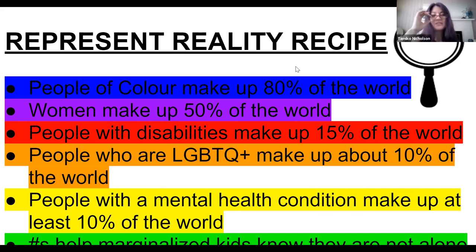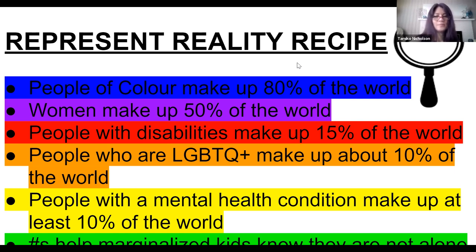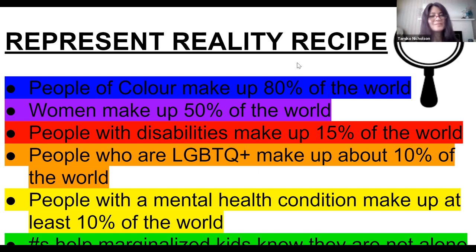Some are saying they would expect mental health stats to be higher — I would expect it to be higher too, especially now. These are just general stats. A lot of them are based on people taking census surveys — it's not super exact, but it's still a base to work from. I use this Represent Reality Recipe for everything I create and in the space I have in my classroom. I try to hit as many of these categories as I can in anything I do, always aiming for at least two or three of them. In my course, 80% of images are people of color. I made sure women make up 50%, I've included images of people with disabilities, people who are LGBTQ, and mental health is reflected through content like the books I choose.